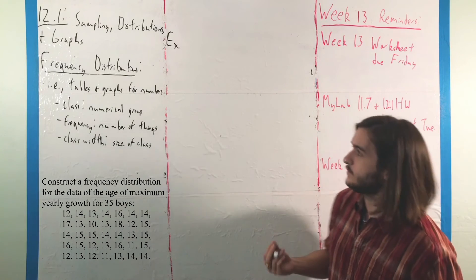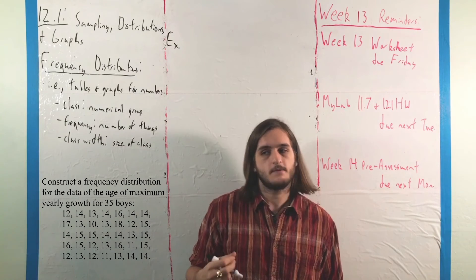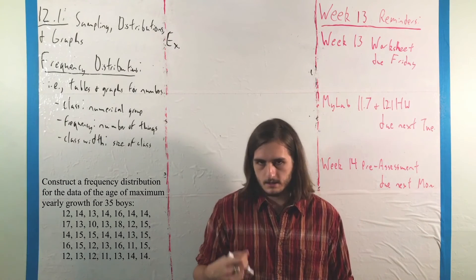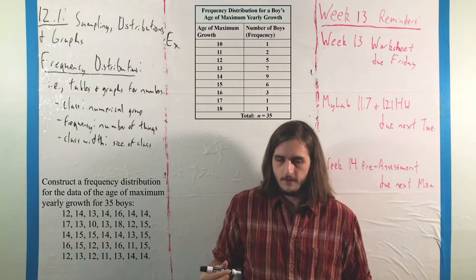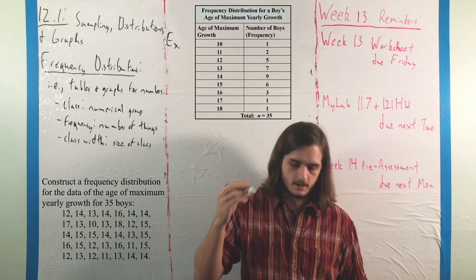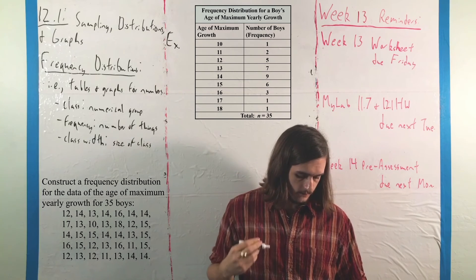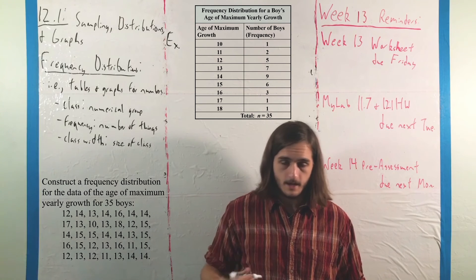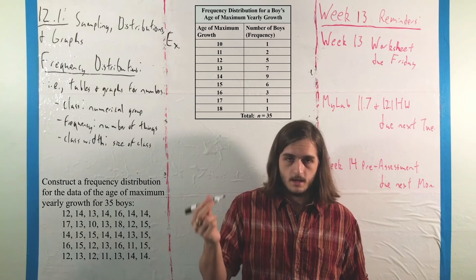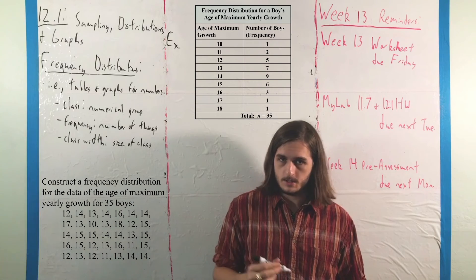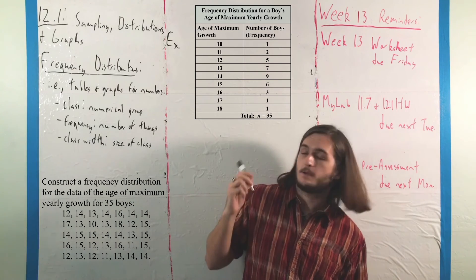So you wouldn't do that. Instead, what you would do is make a frequency distribution where the type of frequency distribution you'd be making is a table, something like this, where the categories are just broken down by year. You don't have those classes broken up into parts. It's just 10, 11, 12, 13, 14, 15, 16, 17, and 18. And then you've got the frequencies. Those are just the number of boys where that happened in each of those given years. So you'd end up with a picture, something like that.